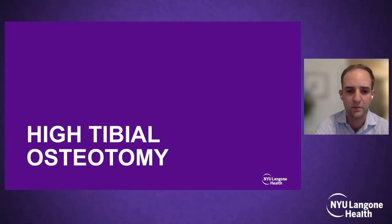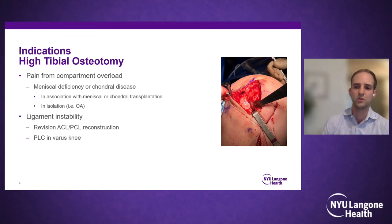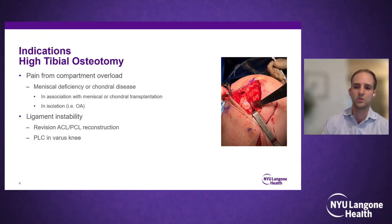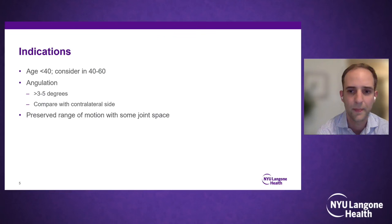Starting with high tibial osteotomies — the indications include a painful compartment with mechanical axis overload, often manifested as meniscal or chondral disease. The osteotomy can be done in isolation or in association with meniscal or chondral transplantation. Another main indication is ligament instability, such as in revision cruciate surgery or posterolateral corner insufficiency in a varus-aligned knee.